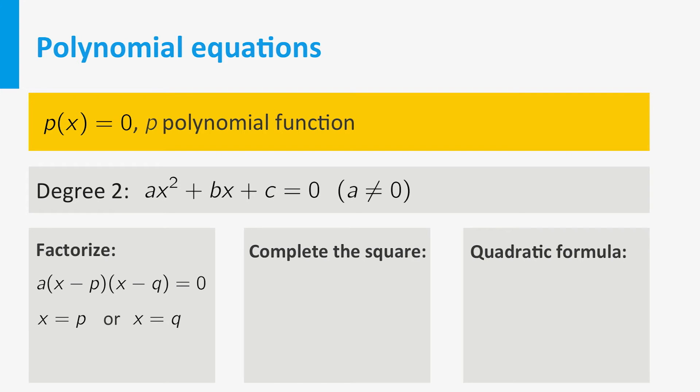In the second case, you try to write the equation as a times x minus r squared plus s equals zero. This is always possible, and the equation can then be solved easily.